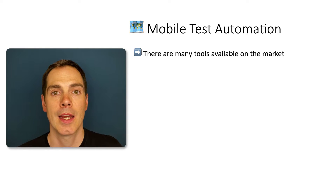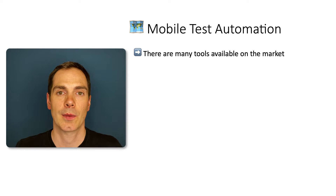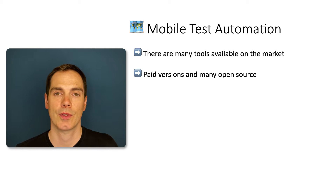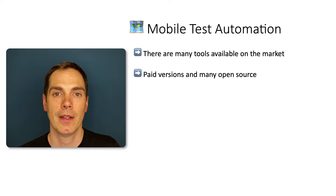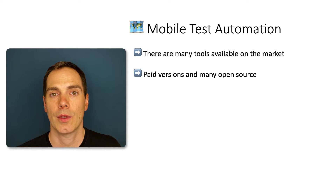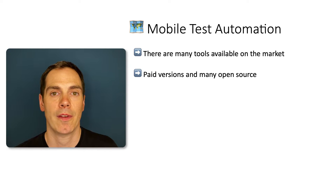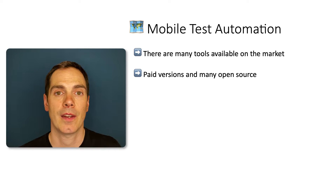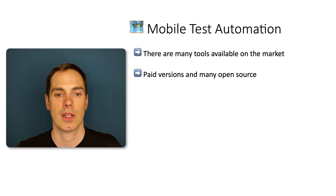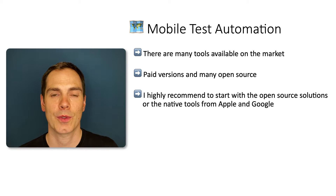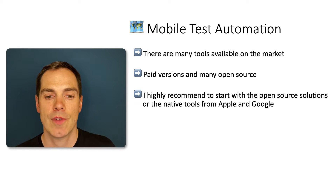There are many tools available on the market — that's why I made this video, to give you an update on the 2022 tools worth looking at. There are many paid versions and many open source versions. Ask yourself: are you relying entirely on open source software? Or do you have a vendor contract that already includes automation solutions? I highly recommend starting with open source frameworks on mobile because they really support all native implementations on Apple and Google.